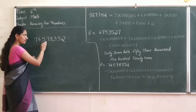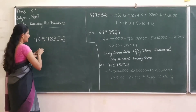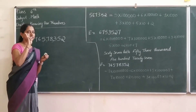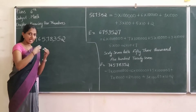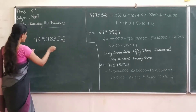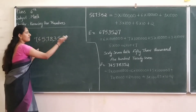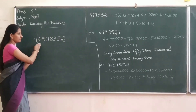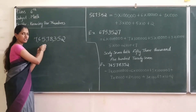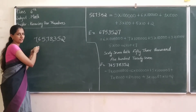After the 5th digit from the right side, then we have to put one comma after the 7th digit from the right side. So: first comma after 3 digits, then after 5 digits, then after 7 digits.